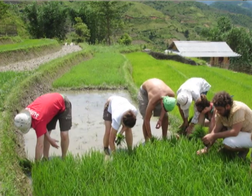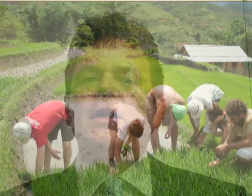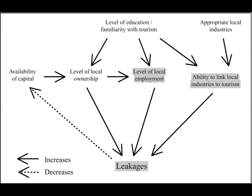By economic leakage, what we mean is for every dollar that a tourist spends, how much of that dollar actually remains in the destination, and how much of it travels out of the destination back to other countries. For example, in the country of Fiji, economic leakage has been reported as high as 65%, meaning that for every dollar that gets spent in that country, only 35% of that is all that remains.